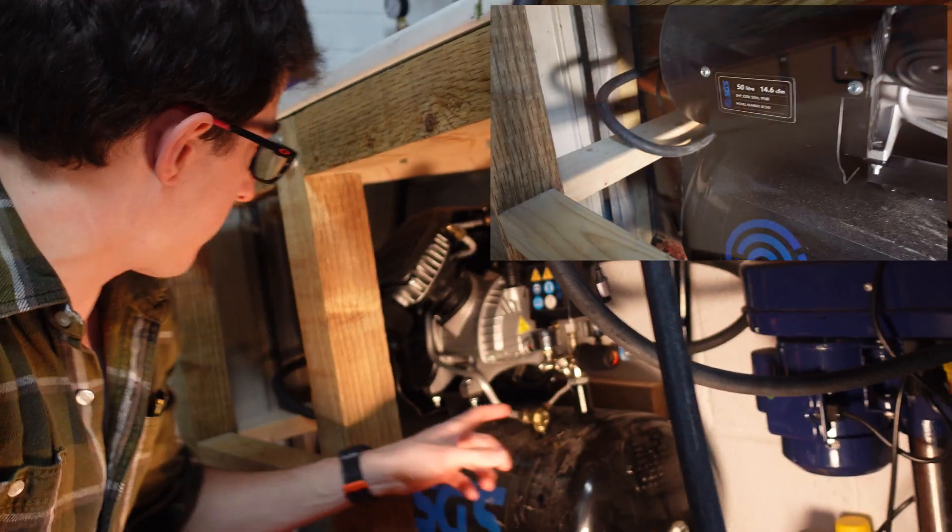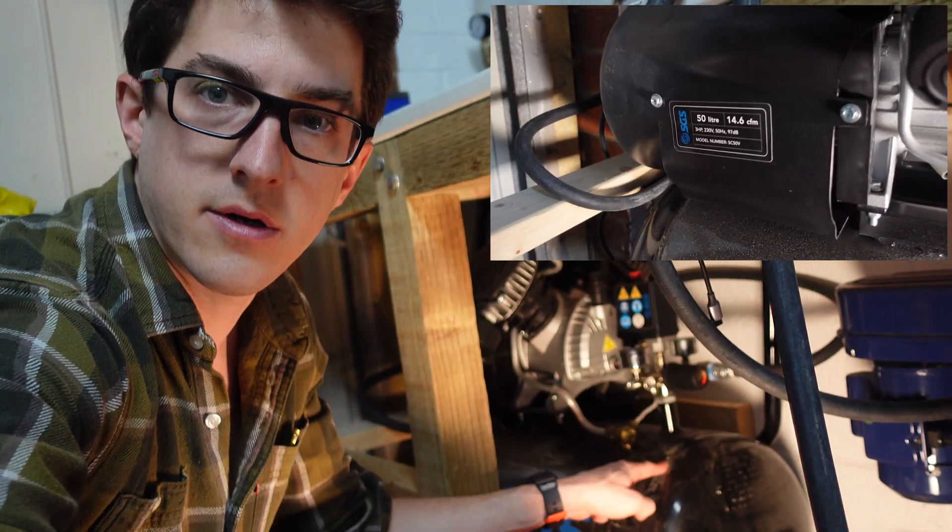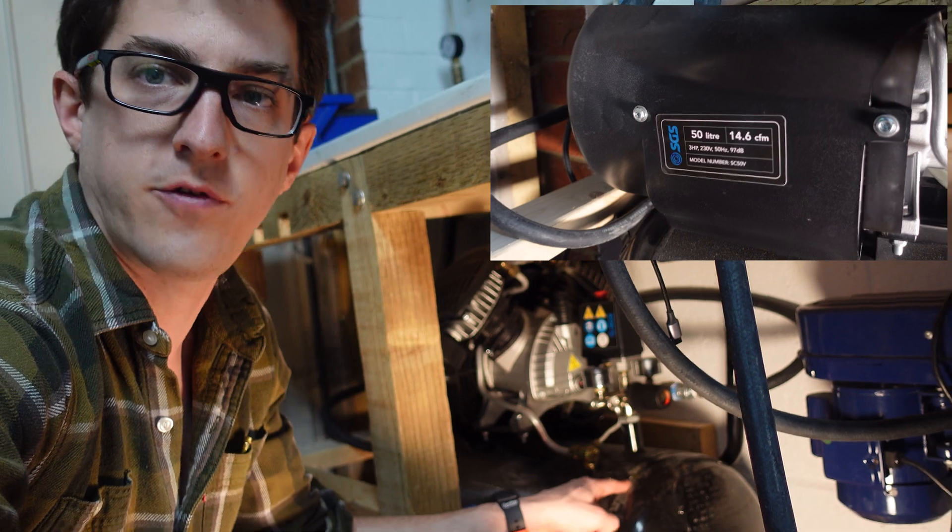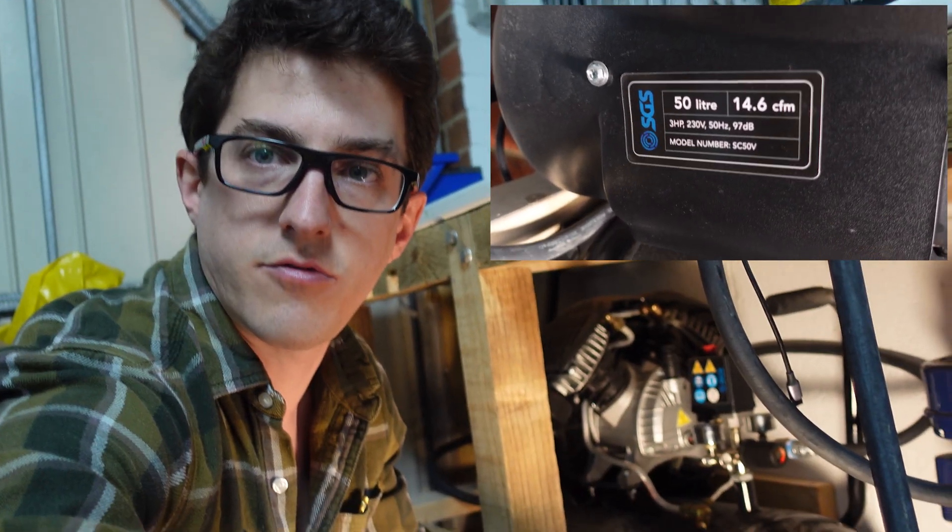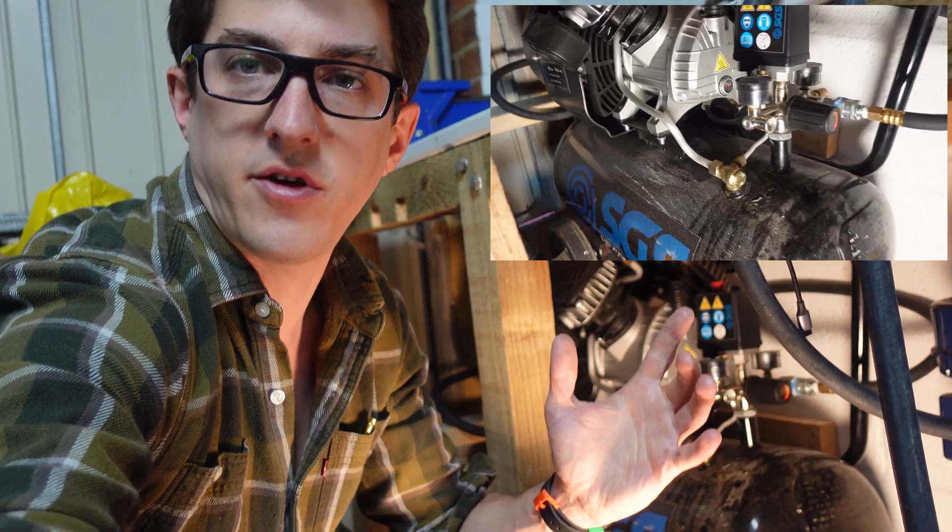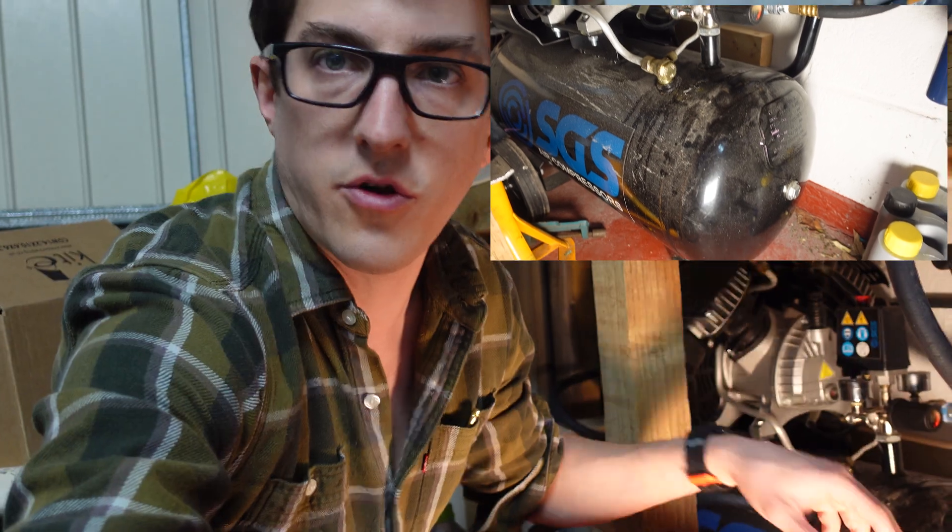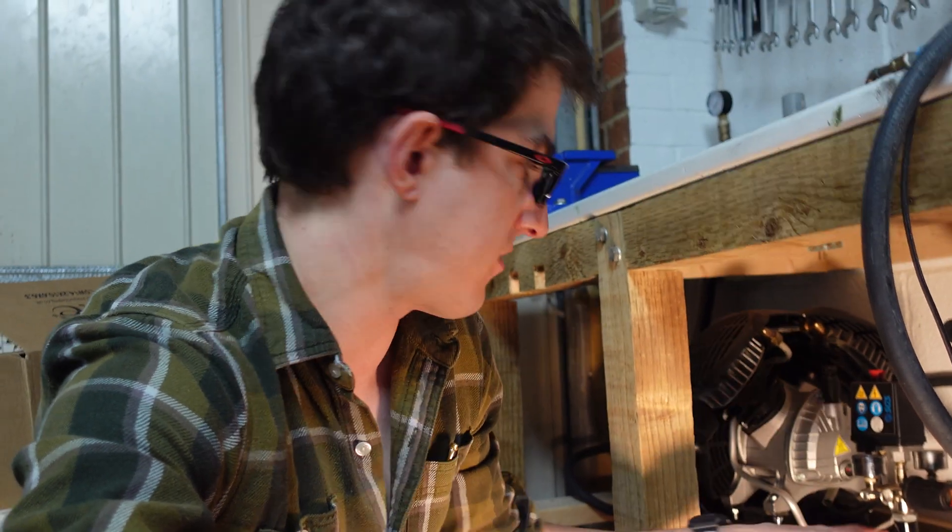My unit is a three horsepower which equates to about 14 and a half CFM and it's got a 50 liter reservoir. So it's not the smallest compressor you can get for home use, but it's a fairly typical one. It fits just underneath my workbench so it suits my purpose. It's not an oil-free one, so it is an oil one and I need to do an oil change shortly on it.